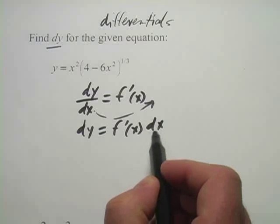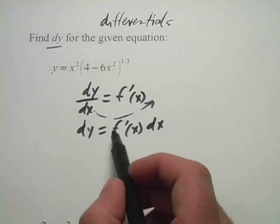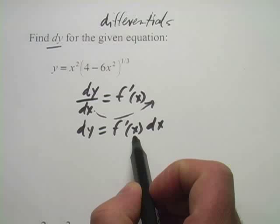This is useful because it can be used to approximate the value of a change in a function. If x varies by some amount, we call that the differential of x, and then we compute the differential of y by multiplying by the derivative of the function at that point.